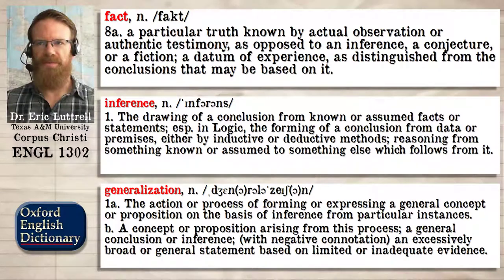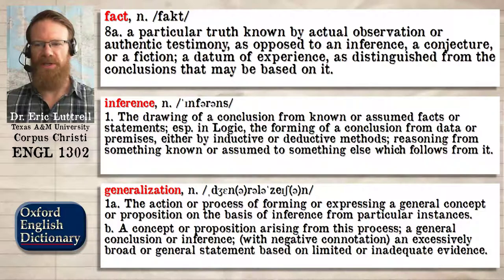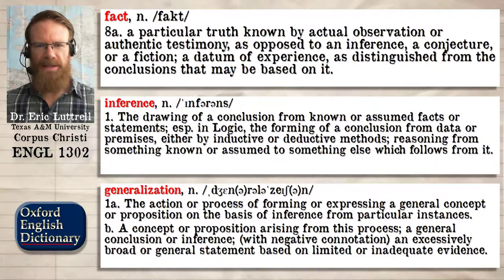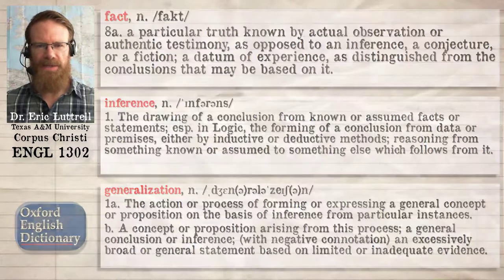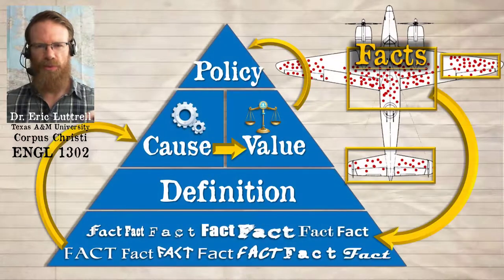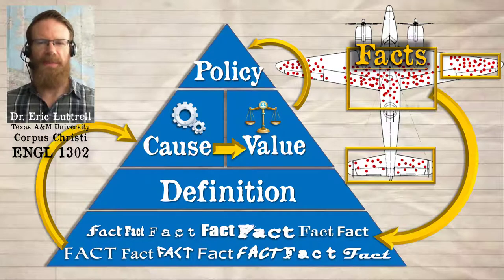So far in this unit, we've started to distinguish facts from inferences, and the particular type of inference being a generalization, where we start with one fact and start to assume that it represents more than just itself. We've recognized that we tend to grab the facts that we can see, and we don't always stop to consider what other facts we don't see.